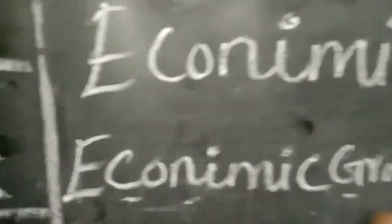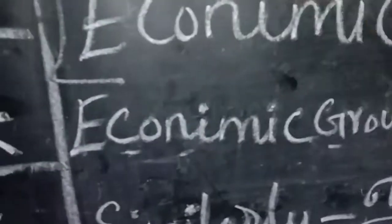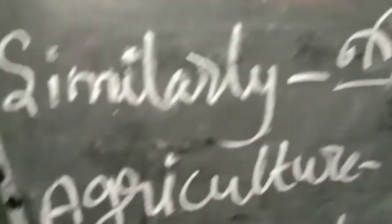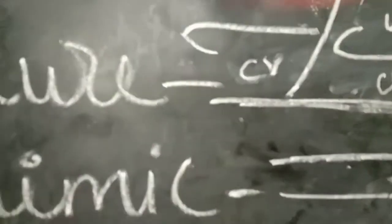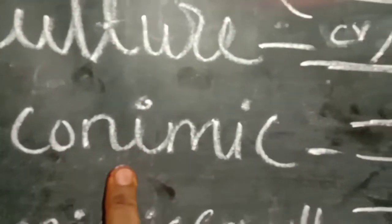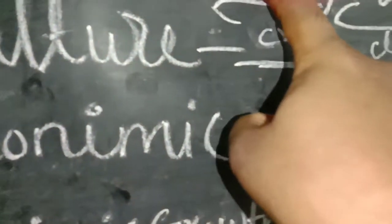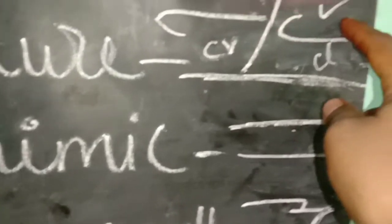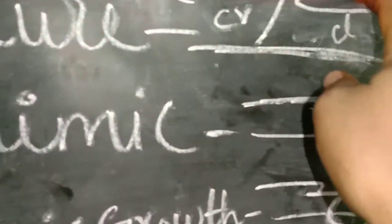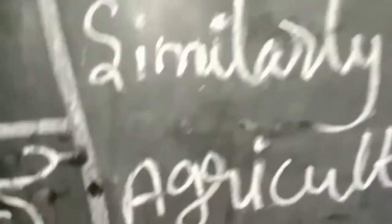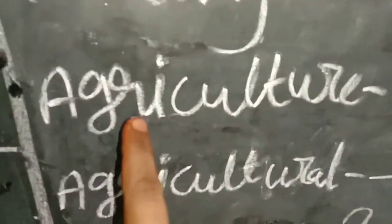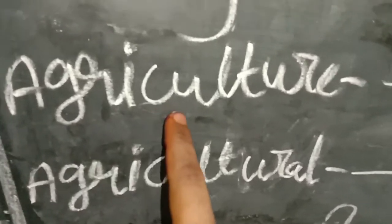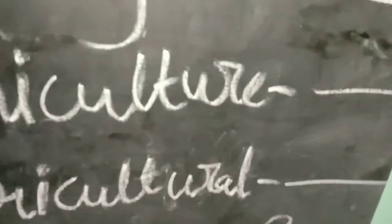If you want to compare these two methods, you can use this method, which is easy to compare. If you learn the stroke and use the stroke in your mind, you will use the culture as well. In the case of the culture, you will use the C to L to C.